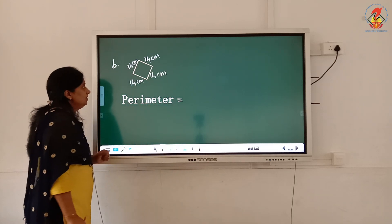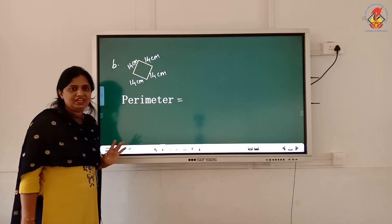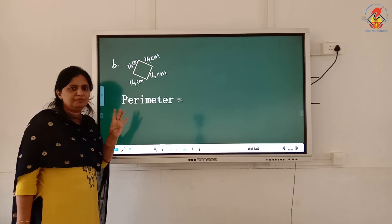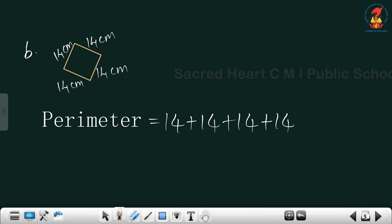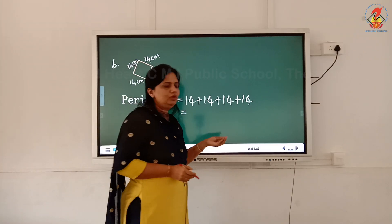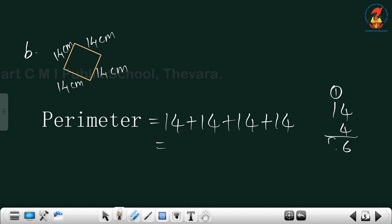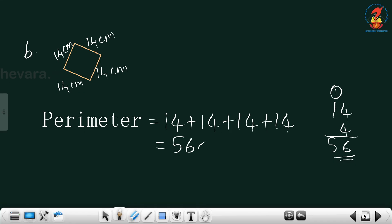Next shape — all 4 sides are equal here: 14 centimeter plus 14 centimeter plus 14 plus 14. Since 4 sides are equal, you multiply by 4 only. 14 times 4 equals 56. That is 56 centimeters.